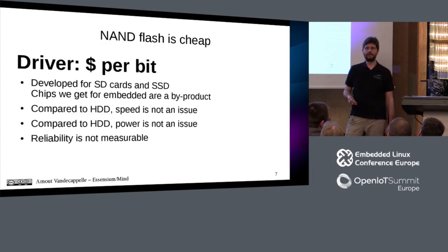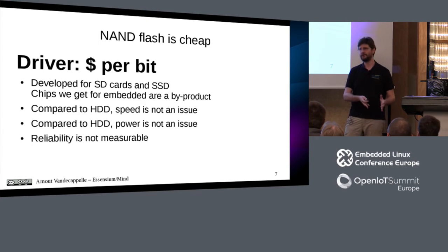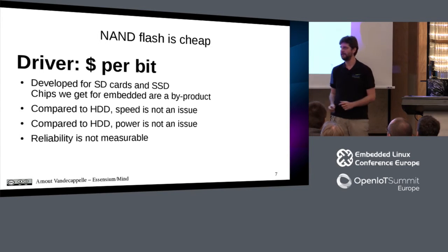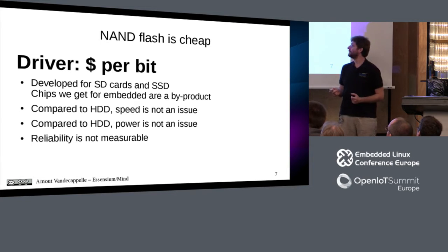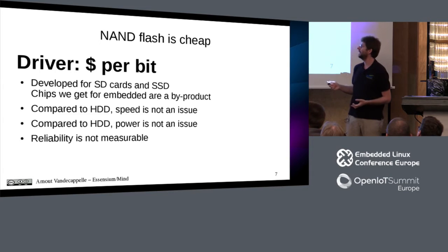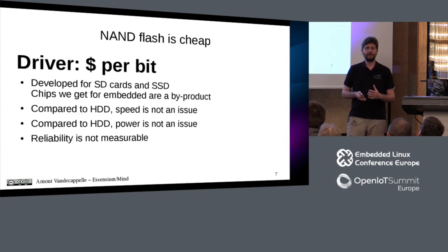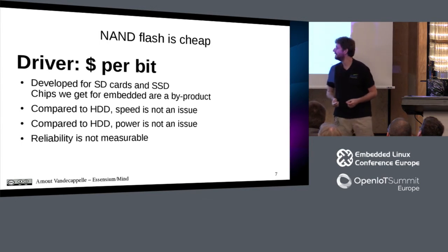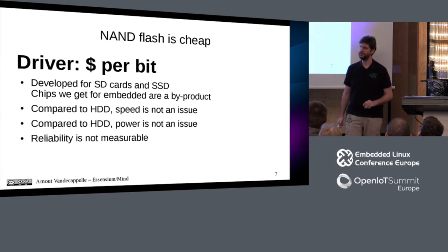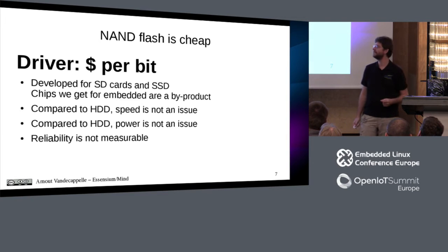What we get in our embedded devices is more or less a byproduct of SD cards and SSD devices. They developed flash chips for SD cards, and then offered them as standalone chips for embedded products. Compared to a hard disk, flash is way faster in both read and write access, and power is not an issue either. Reliability is also an issue for SSD users, but it's much less of a marketing thing than cost.